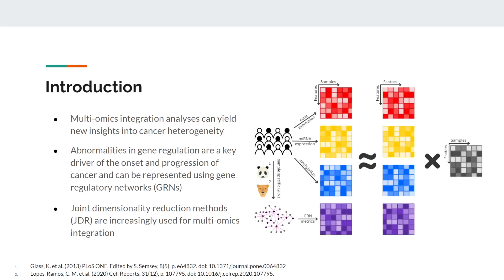Joint dimensionality reduction methods have been increasingly popular in performing multi-omics integration analyses. Briefly, these JDR methods take as input a set of omic matrices and decompose them into a set of latent factors as well as some weights that show how the different features contribute to these factors. In this study, we used 10 cohorts from TCGA, and for all patient samples we had gene expression, microRNA expression, and methylation data. We also generated sample-specific gene regulatory networks.